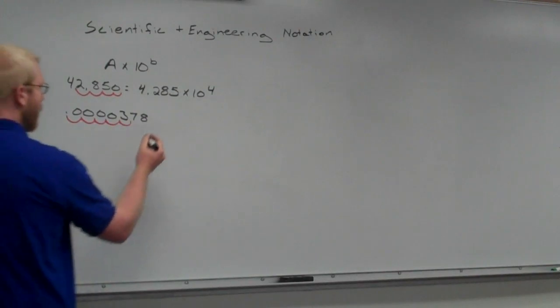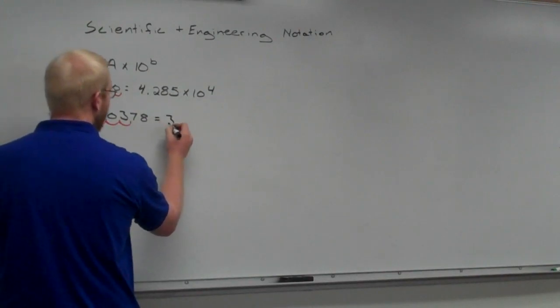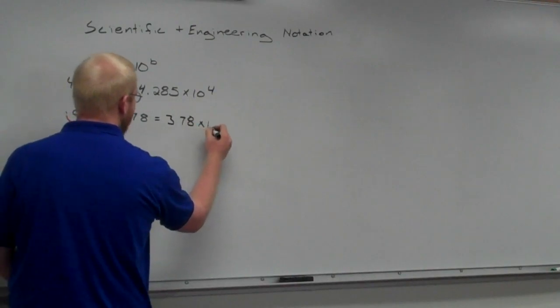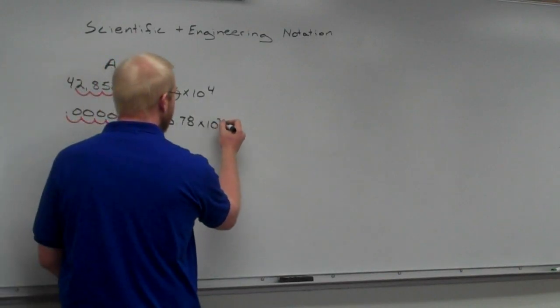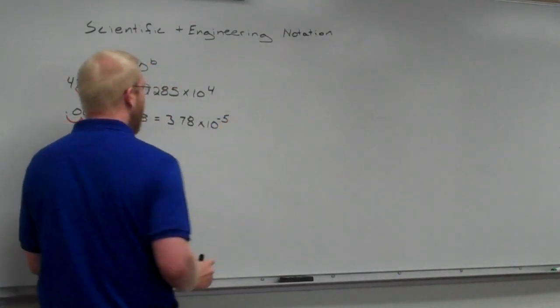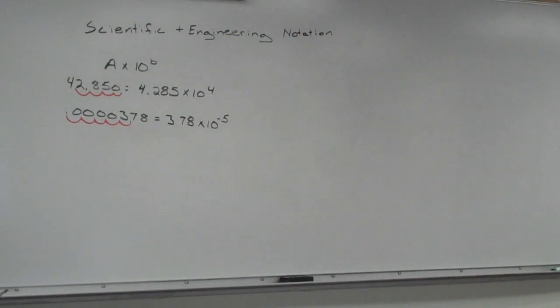So, I'm going to go ahead and end up with 3.78 times 10 to the... What do you think I'm going to do for my exponent? Negative 5. Negative 5, because I had to move it 5 places backwards. So, let's go ahead and do one more that I let you guys go ahead and do a little more of the work on.